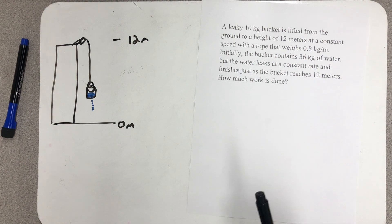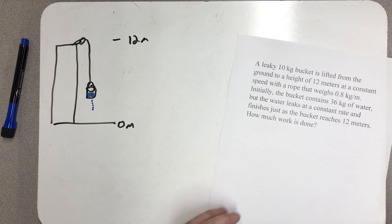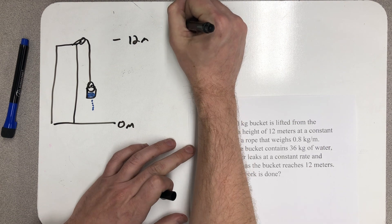So I'm supposed to calculate the work done and have to realize that I'm lifting the bucket, the water, and the rope. So I need to calculate the work done on all three parts, all three components of this system.